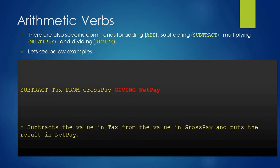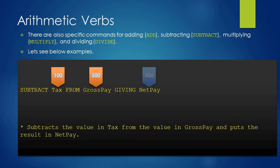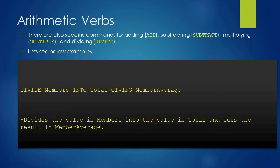In the second example of SUBTRACT, we are giving the resultant value to a third variable. In this statement we are subtracting the value in the tax variable from the value in the gross pay variable and giving the result into net pay. If gross pay is 500 and tax is 100, then the result value of 400 will go into net pay. The values of tax and gross pay will remain as they are.